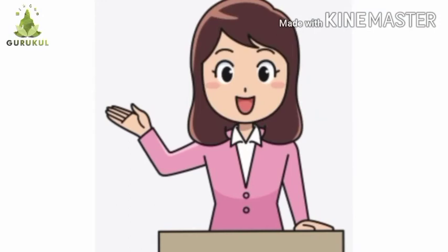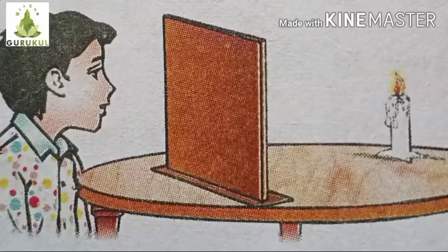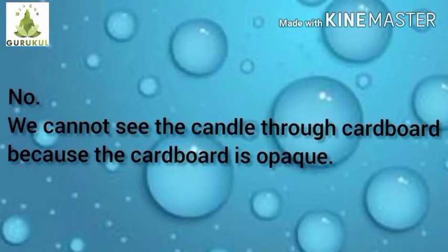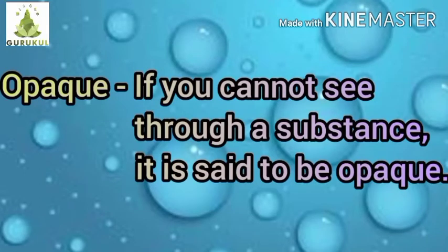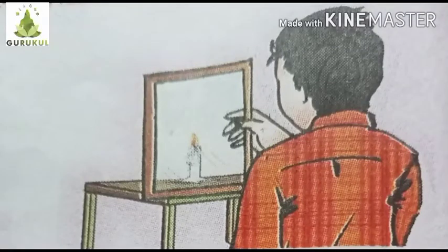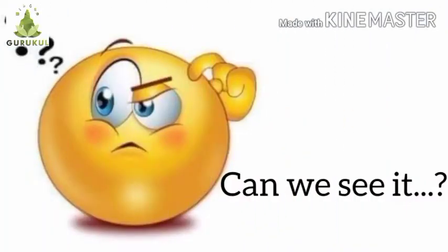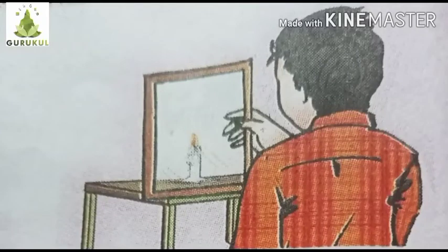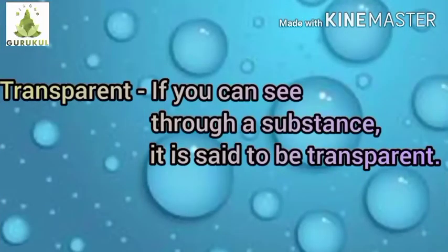Let us try to see a candle through a cardboard. Can we see it? No, we cannot see the candle through the cardboard because the cardboard is opaque. Opaque means if you cannot see through a substance, it is said to be opaque. Now we will try to see the candle through the glass. Yes, we can see it because the glass is transparent. Transparent means if you can see through a substance, it is said to be transparent.